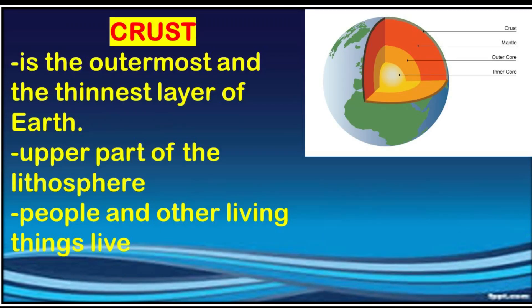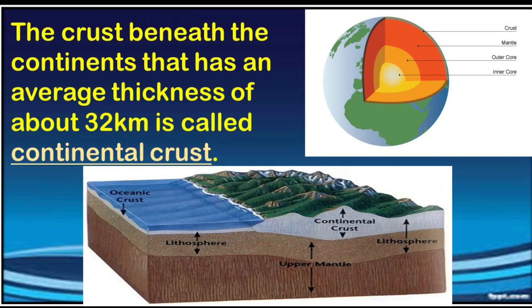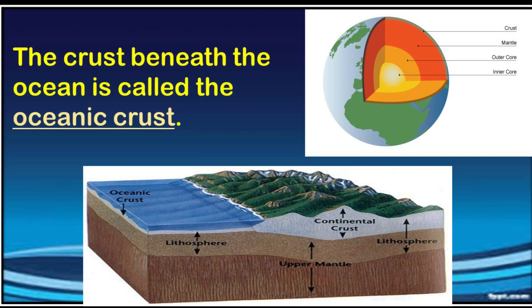The crust is the outermost and the thinnest layer of the Earth. This is the upper part of the lithosphere, where people and other living things live. The crust beneath the continents, which has an average thickness of about 32 km, is called the continental crust. The crust beneath the ocean is called the oceanic crust.